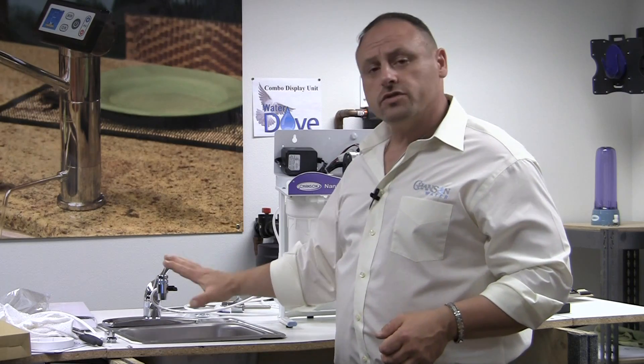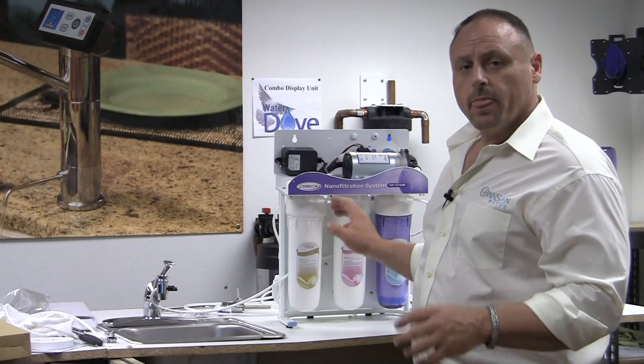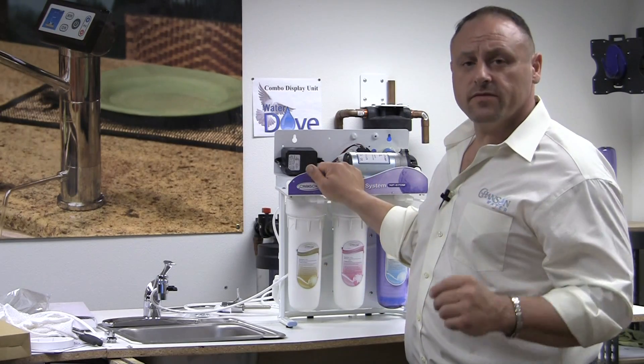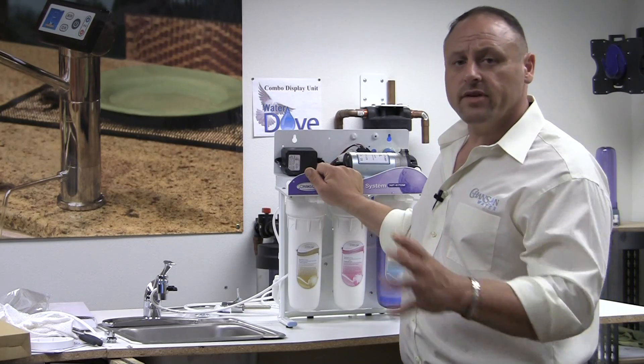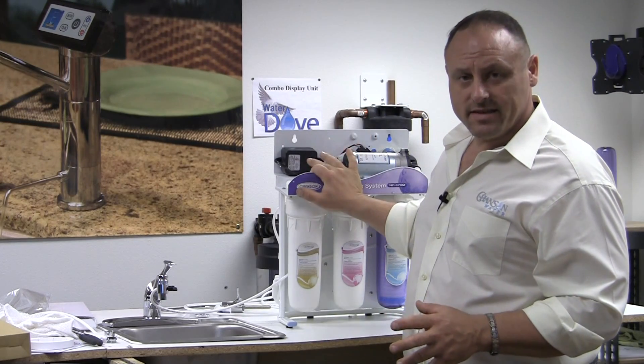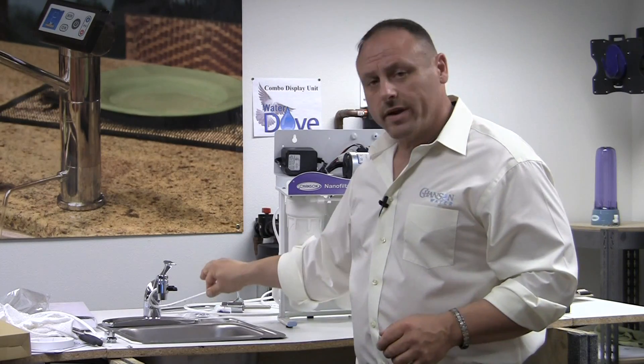So to use the nano filter now at this point, and I didn't go through all the connections. To see all the connections, go back to the first chapter under sink installation method, and you'll see everything you need to do to get it to this point. So we've got our main water connection going in.